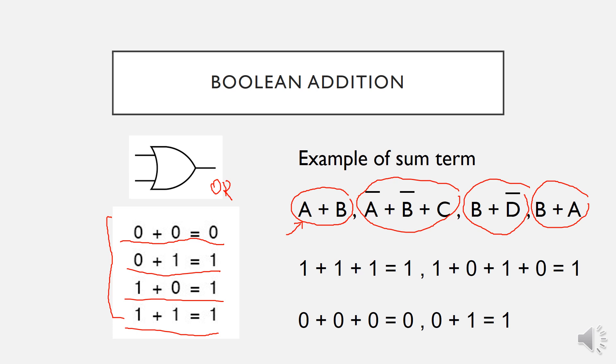A sum term is equal to one when at least one variable in the term is one. If at least one is equal to one, the sum term will become one. The sum term is equal to zero when all of the inputs or variables are zero. This is the basic of Boolean addition.